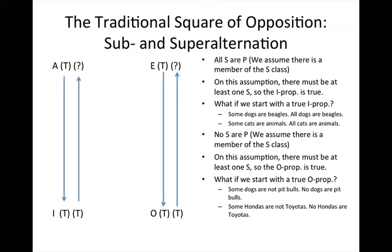Look at the blue arrow associated with that truth value — it allows us to infer a true I. So if an A proposition is true, the I proposition is true. Why is that the case? Take a look on the right side of your screen and you'll see the first bullet point says 'all S are P,' and there's a further note: we assume there is a member of the S class. So if we're saying all S are P and there is an S, that means it must be the case that some S are P.